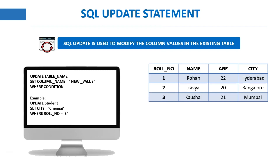Consider a table 'student' which has columns role number, name, age, and city. Now if I want to update the city of the student having role number 3 from Mumbai to Chennai, the following query would be: UPDATE student SET city = 'Chennai' WHERE role_number = 3.